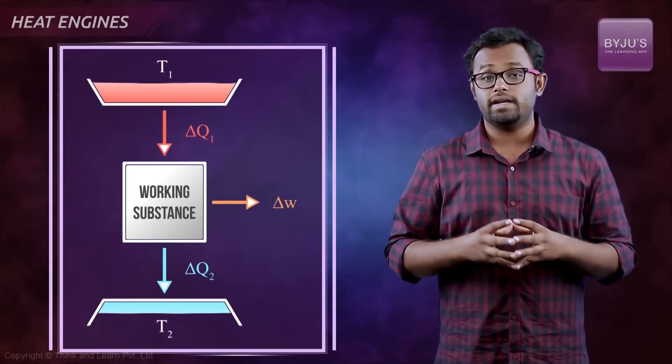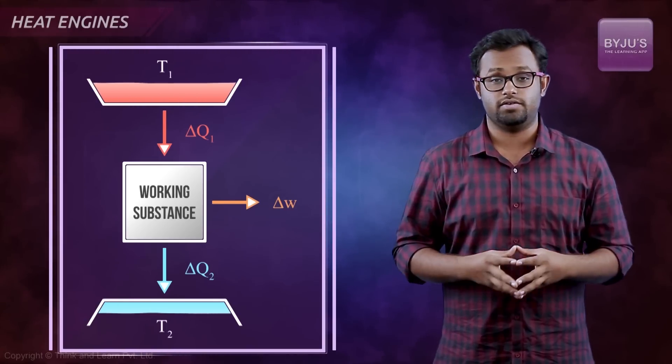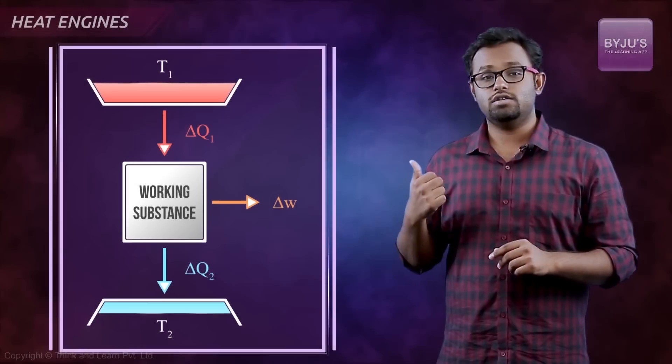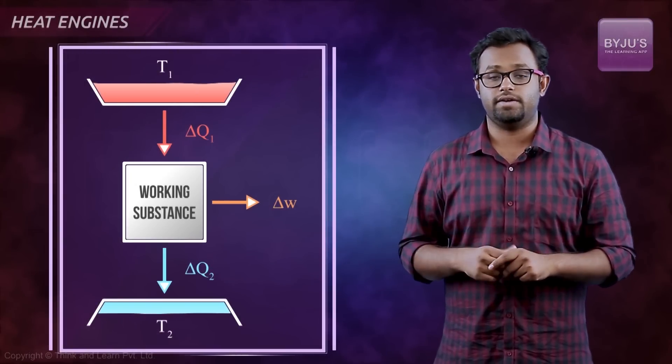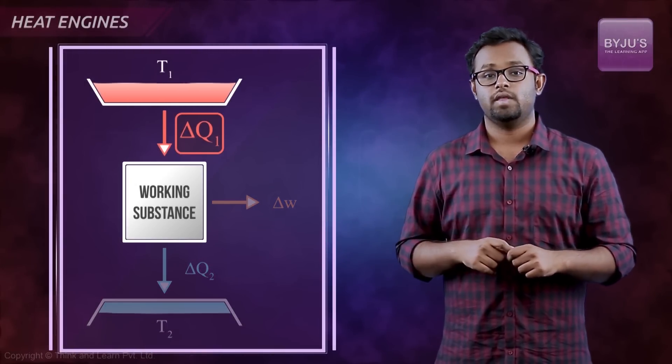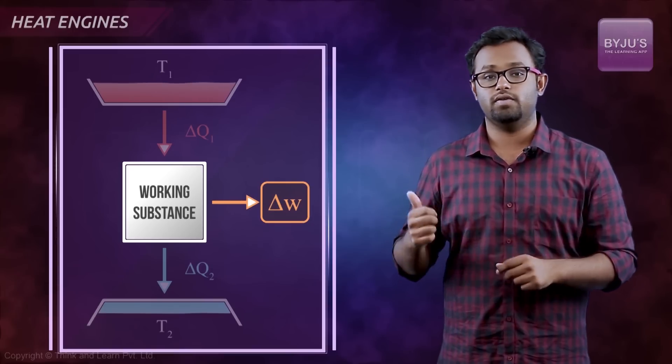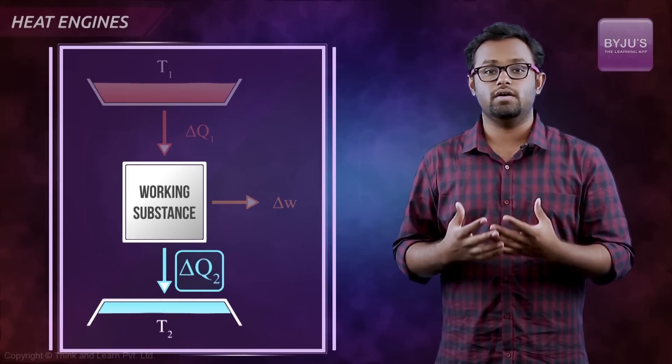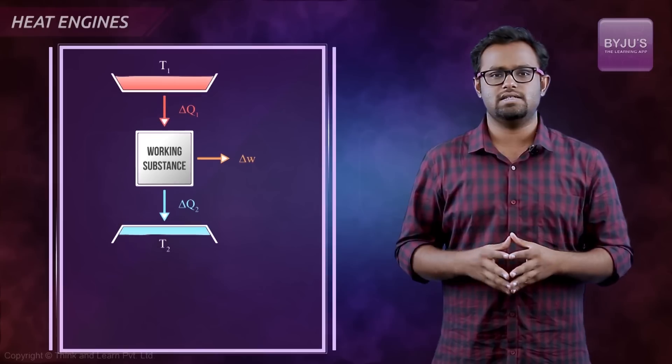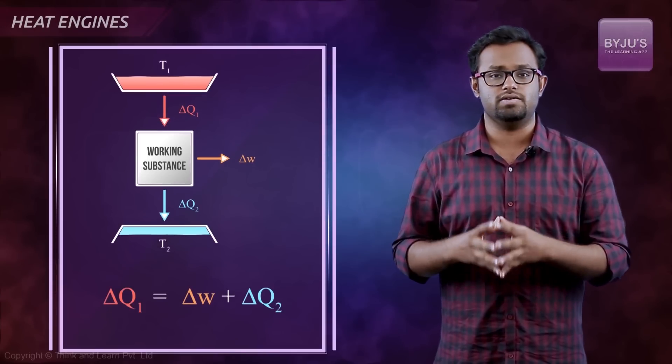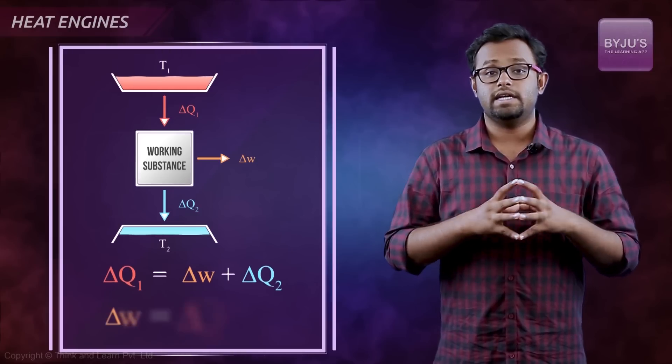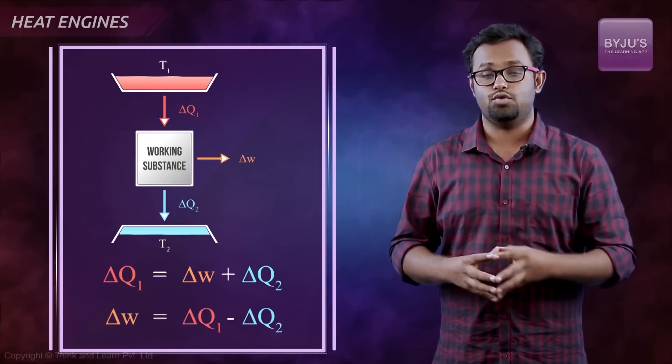Let's recall the mathematical statement for the first law of thermodynamics. It's nothing but the conservation of energy. If I apply conservation of energy in this case, I am supplying energy in the form of heat delta Q1, and that energy is given off in the form of work delta W and some heat delta Q2. So conservation of energy tells us that delta Q1 must equal delta W plus delta Q2. From there I get delta W equals delta Q1 minus delta Q2.